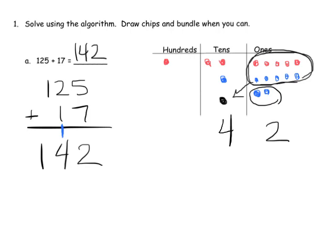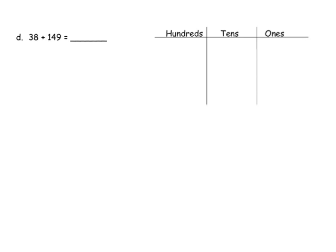We have one in the hundreds and nothing extra in the hundreds, so altogether that equals one in the hundreds place. Our answer is 142. We can show that in our drawing: five plus seven is 12, so we bundle 10 ones to equal one ten, leaving two in the ones place, and then two plus one plus one gives us four in the tens column.